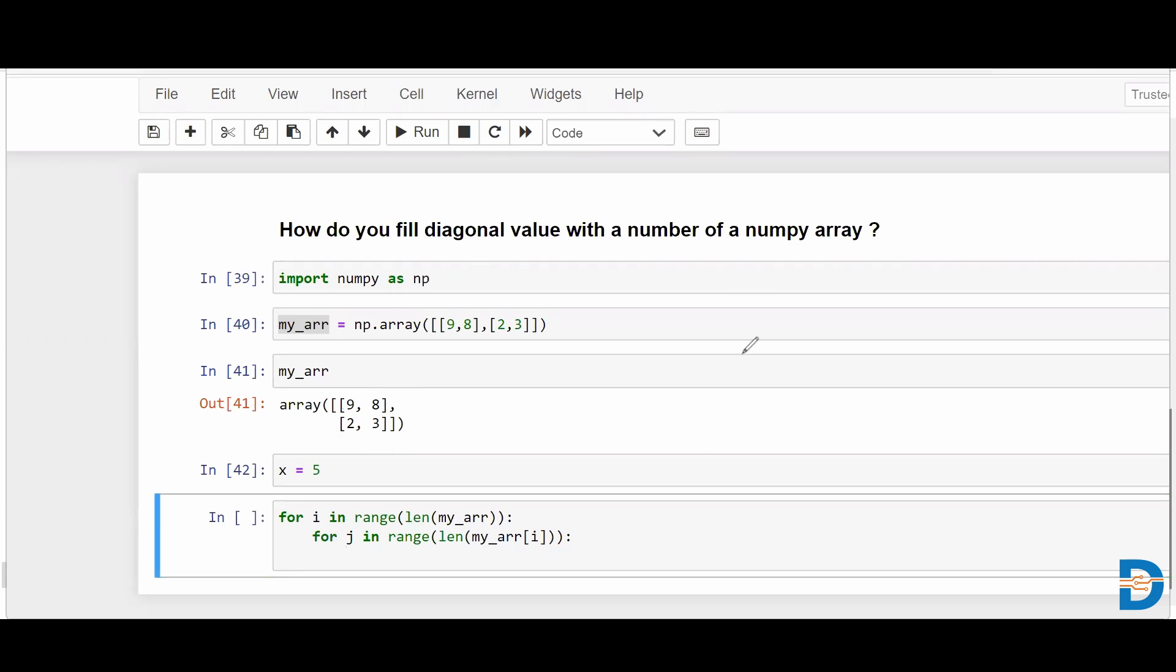If I simply put a condition, if I say if your row index is equal to your column index, it means that you are at the diagonal position. So simply you take your array, my_arr, and then you select that particular element by selecting the specific row and column, and then you say equal to your x which is nothing but five.